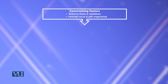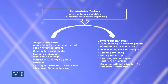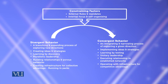After external rules, mandates, external focus and self-organizing, we determine a model around two behaviors: divergent behavior and convergent behavior. Divergent behaviors include: (1) branching and expanding — process of exploring new directions, (2) creating new ideas and strategies, (3) learning by discovery, (4) floristic leadership, (5) building relationships and porous networks, (6) creating infrastructure for collective advantage — running in packs.